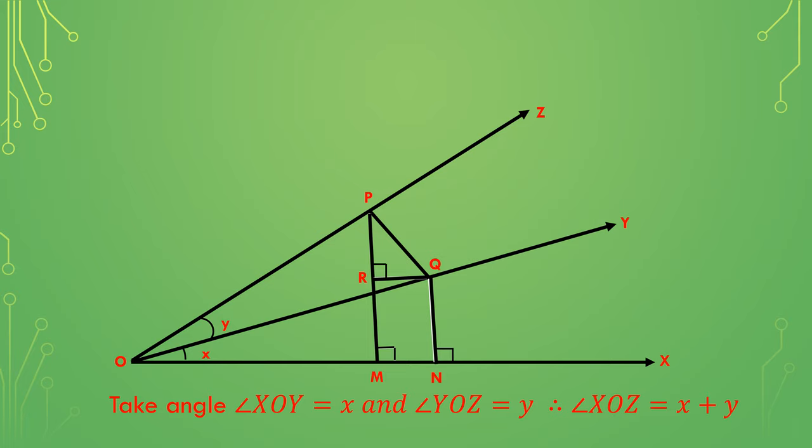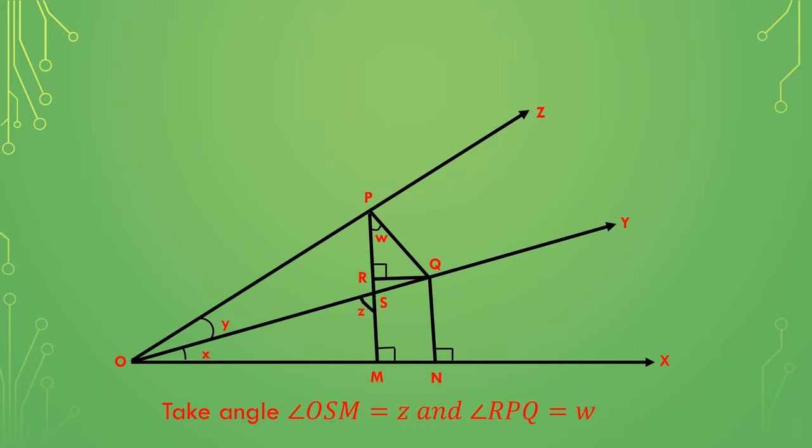Now let us take angle XOY equals x and angle YOZ equals y. Therefore, clearly angle XOZ becomes x plus y. Now let us take angle OSM equals z and angle RPQ equals w.